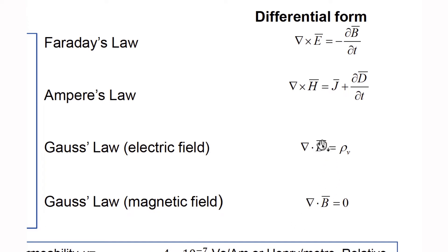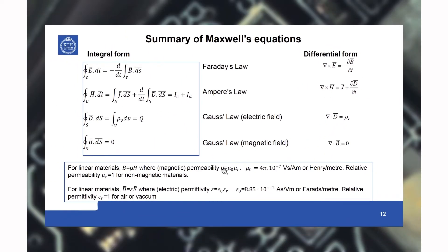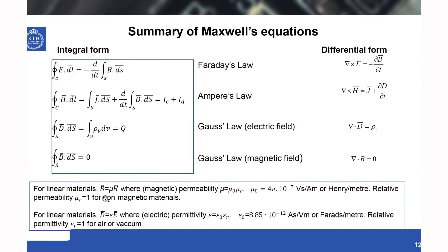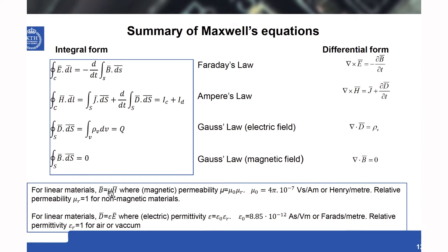E and D are related, and similarly H and B are related. For so-called linear materials, these are simple linear relationships where B equals mu times H. Mu is called the magnetic permeability, written as mu_0 times mu_r. Mu_r is the relative permeability, and mu_0 has a numerical value with units of volt-seconds per ampere-meter, or henries per meter. Mu_r equals one for non-magnetic materials and greater than one for ferromagnetic or magnetic materials.